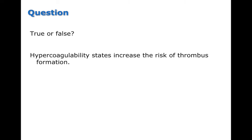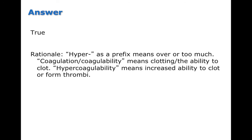True or false: Hypercoagulability states increase risk of thrombus formation. The answer is true. Hyper means too much, and coagulability means clotting — so hypercoagulability can definitely form thrombi. Remember, thrombi are stationary clots that can dislodge to form emboli, potentially plugging vessels throughout the body, such as in the lungs or brain.